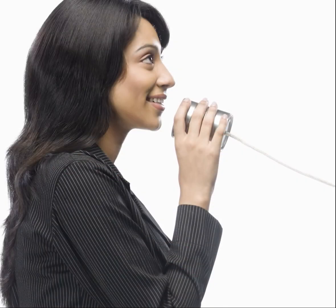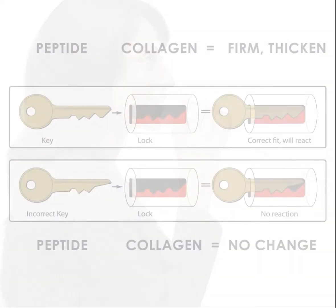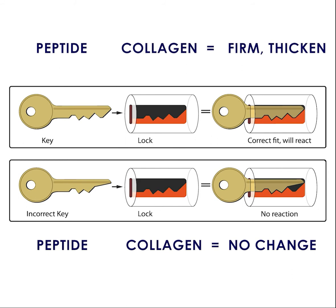Peptides act as little protein messengers with a very specific message, like a built-in GPS directing them to a very specific location. Pretend that every cell in your body has a built-in lock and every peptide has the only key that fits that specific lock. When it's applied to your skin, it will penetrate and its internal GPS will automatically direct its key to its perfectly matching lock. The messages they deliver are highly specific and the body knows exactly how to respond — to increase firmness in our collagen, to strengthen capillaries, or to help the snap in our elastin.